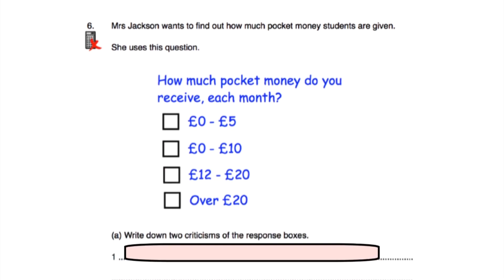Question six says Mrs. Jackson wants to find out how much pocket money students are given, using the question: 'How much pocket money do you receive each month?' with boxes: £0 to £5, £0 to £10, £12 to £20, and over £20. We're asked to write down two criticisms of the response boxes. First, £0 to £5 and £0 to £10 overlap — if I received £3, I could tick either box. Second, there's no option for amounts between £10.01 and £11.99.